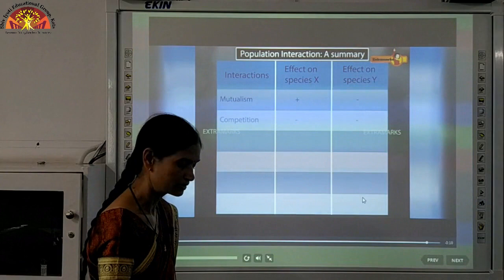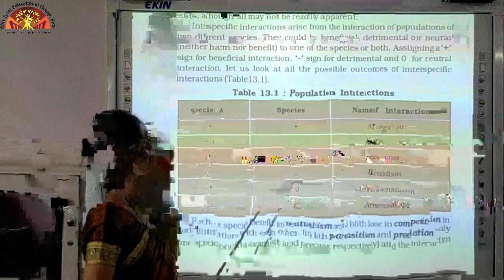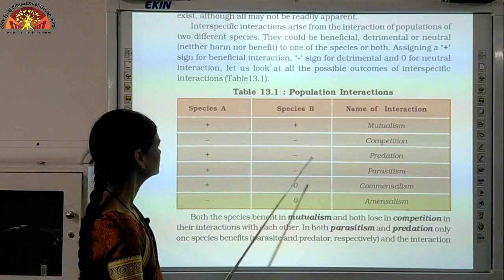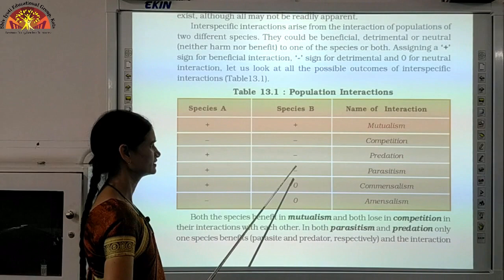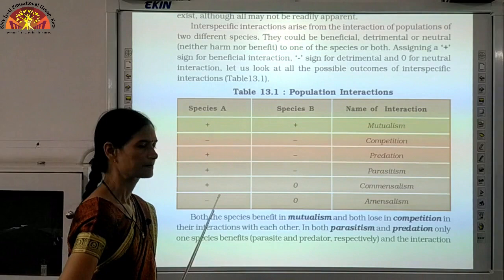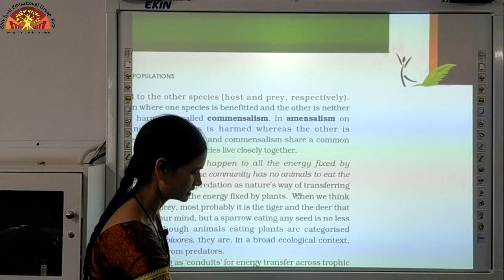There is a table given in your book on page number 232 — study Table 13.1. In mutualism, both species are denoted with a plus, meaning both are benefited. In competition, both may get harmed. In predation, one is benefited and one is harmed. In parasitism, again one is benefited and the other is harmed. In commensalism, one is benefited and the other is neither harmed nor benefited. In amensalism, one is harmed and the other is unaffected.